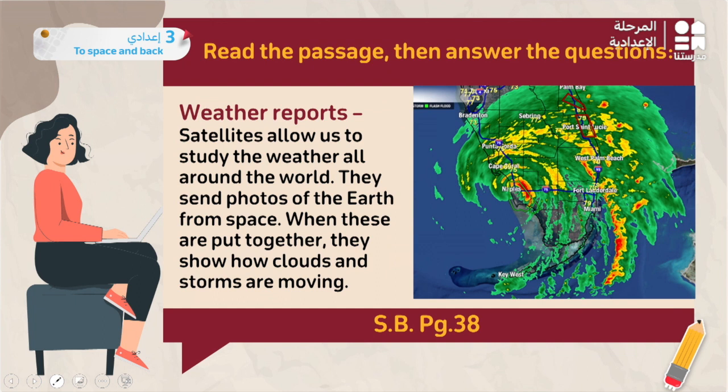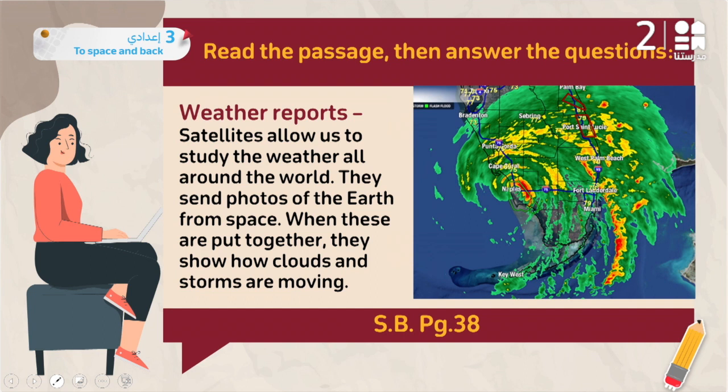Second use of satellites: weather reports. Satellites allow us to study the weather all around the world. They send photos of the earth from space. When these photos are put together, they show how clouds and storms are moving.